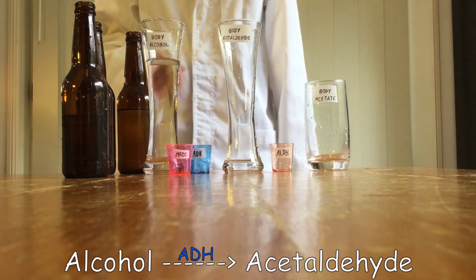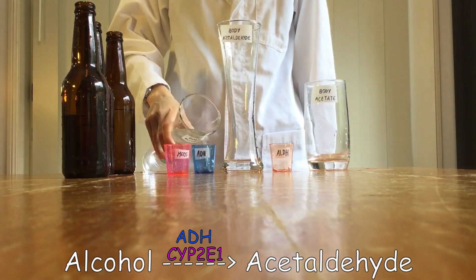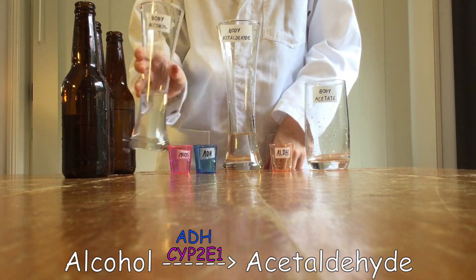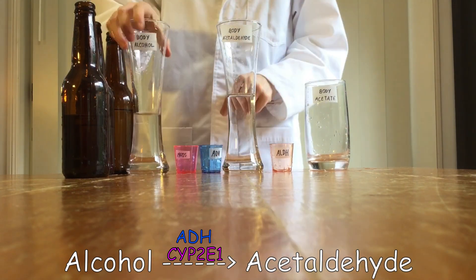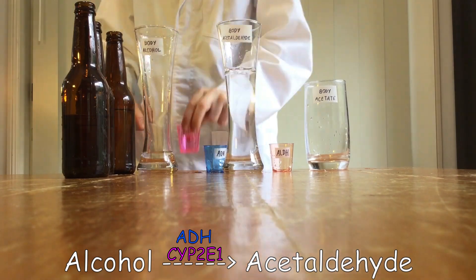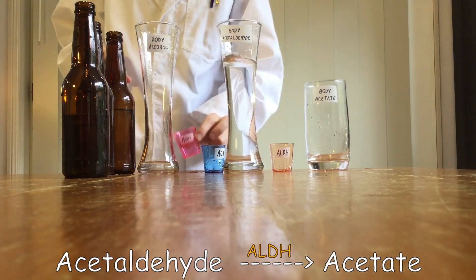If you drink this much very often, you're going to use the MEOS pathway a lot, and so the body actually starts making more CYP 2E1. More CYP 2E1 means it can process alcohol better, and this is how some people build up a tolerance to the effects of alcohol. Acetaldehyde is then converted to acetate,